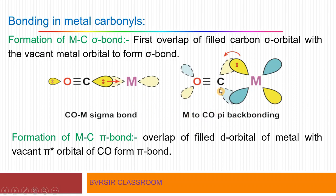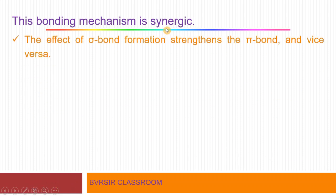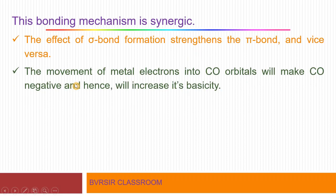After studying the molecular orbital diagram of carbon monoxide, you will appreciate this concept better. This bonding mechanism is synergic — each bond reinforces the other. The sigma bond strengthens the pi bond and the pi bond strengthens the sigma bond; both are strengthened together. The effect of sigma bond formation strengthens the pi bond and vice versa, so both bonds become strong.